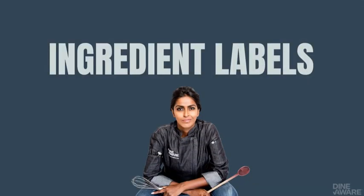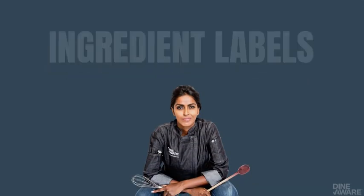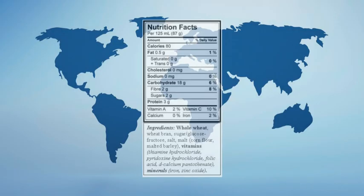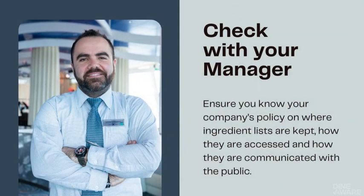Ingredient labels. Reading labels. Food labels differ from country to country and region to region. Here we include the best practices for understanding food labels to help in preventing FAI reactions. Remember to check with your manager about your company's policy on where ingredient lists are kept, how they are accessed, and how they are communicated with the public.